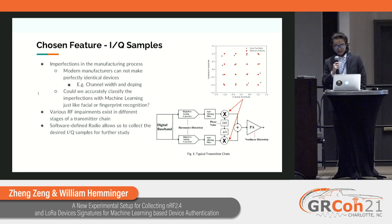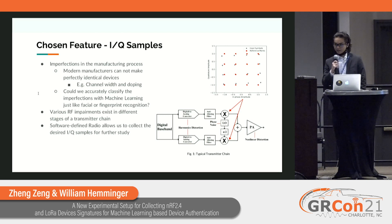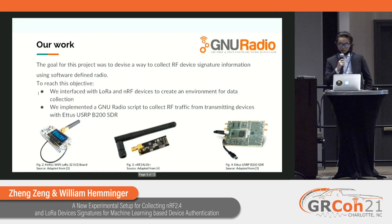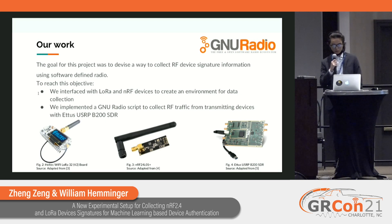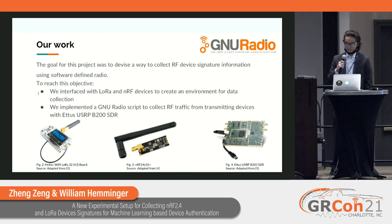To collect the desired IQ samples, software defined radio naturally becomes our first option because of its extreme level of configurability, allowing us to collect data for different kinds of devices for future processing. This summer we created a setup that uses software defined radio to collect IQ samples for chosen RF devices. We chose two types of devices: the Heltec Wi-Fi LoRa32 and the NRF24L01+, and we chose the Ettus USRP B200 to collect our dataset.